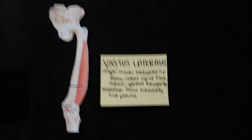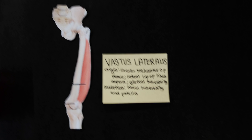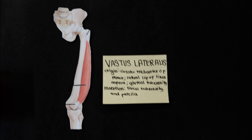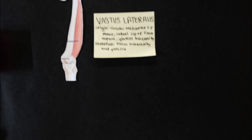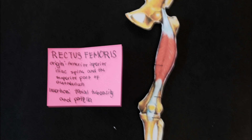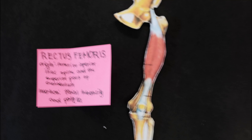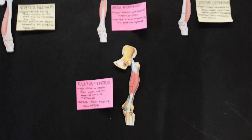Vastus lateralis: origin is the greater trochanter of the femur; insertion is the tibial tuberosity via the patellar ligament. Rectus femoris: origin is the anterior inferior iliac spine; insertion is the tibial tuberosity via the patellar ligament.